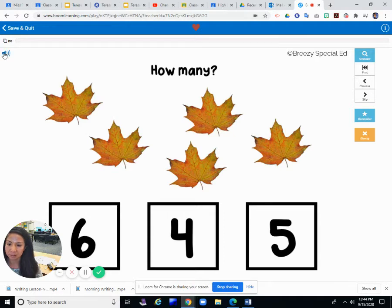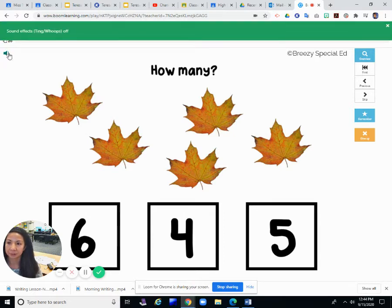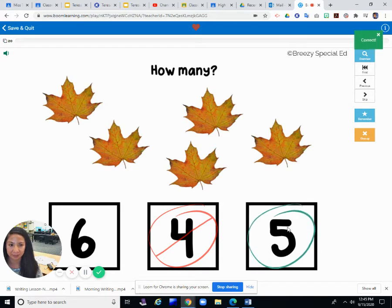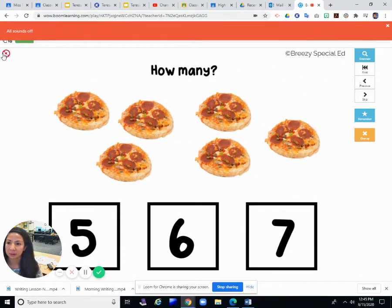So there's sound on this. You press the speaker to hear the sound. That's the sound effect. So how many leaves? Let's count together. One, two, three, four, five. And then you pick the number. Is it six, four or five? Let's see. Incorrect. Is it six or five? Let's count it again. One, two, three, four, five.